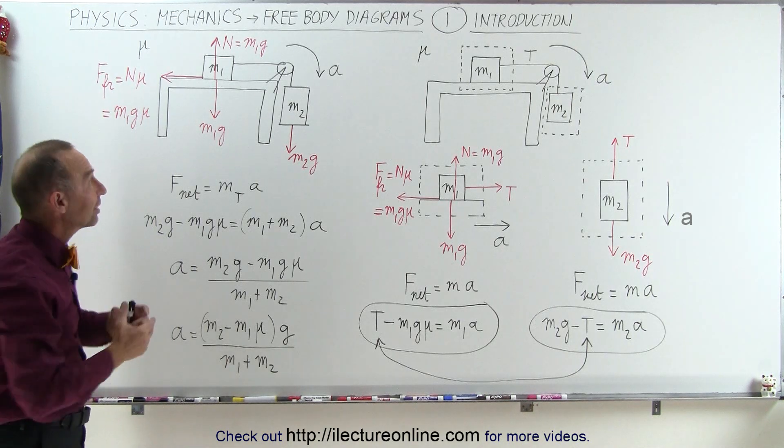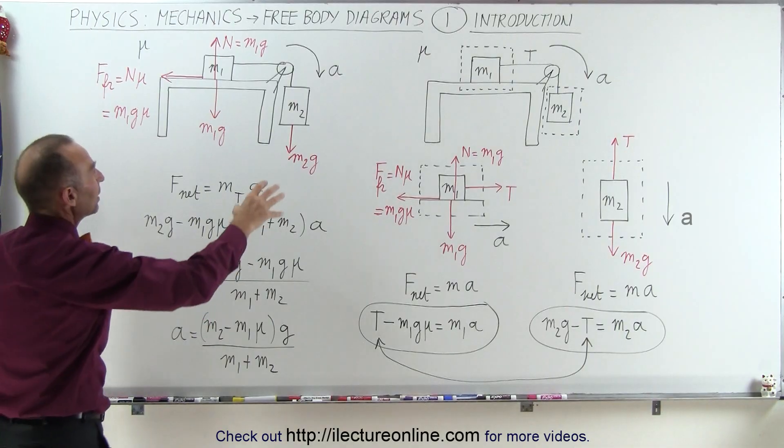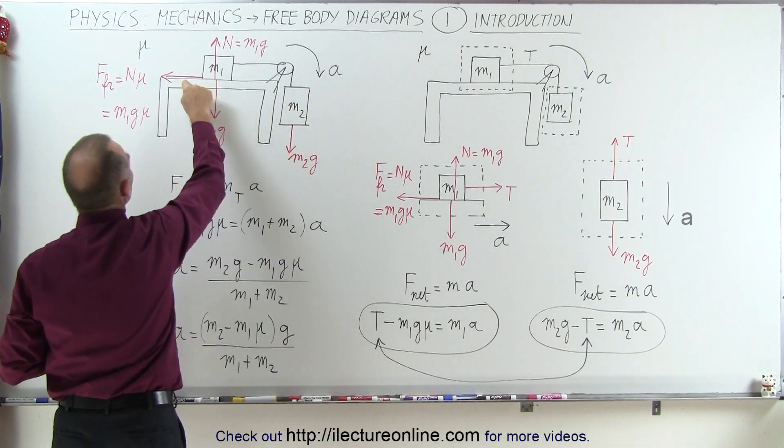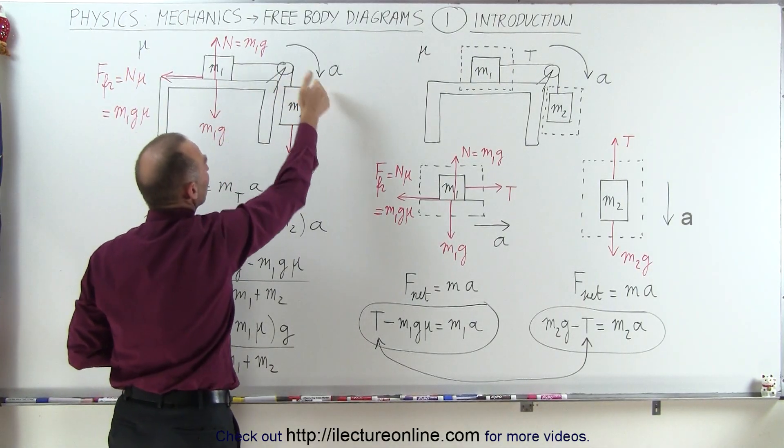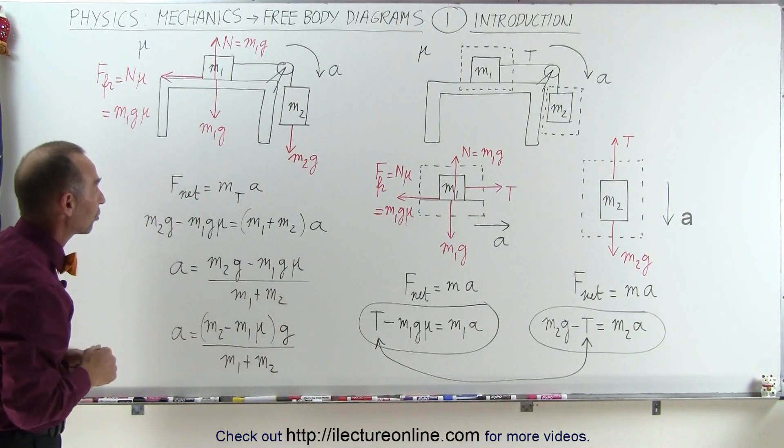And then we realize that the only two forces causing the system to accelerate would be this force right here which actually aids acceleration and this force right here which opposes acceleration. We're going to assume that the acceleration is going to be in this direction and if we end up with a positive answer then our assumption was correct.